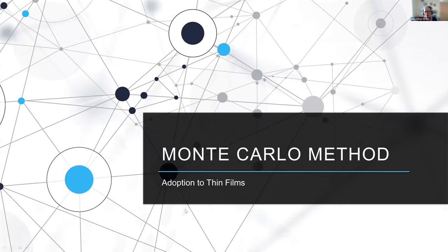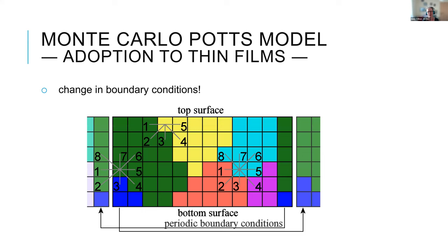What's the catch for thin films? Previously, I treated 3D samples with periodic boundary conditions in all directions — infinite continuity, no special surface treatment. However, for thin films, there are very distinct surfaces that can have a strong effect. So in simulations for thin films, I keep only the horizontal boundaries as periodic boundary conditions, and treat the top and bottom surfaces differently — as free surfaces.